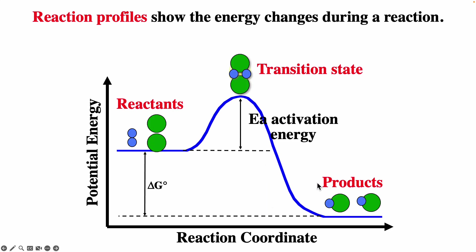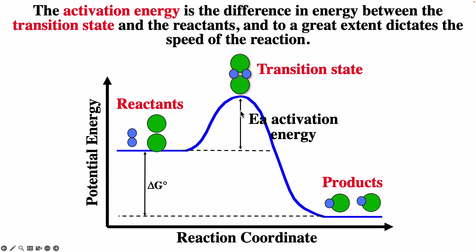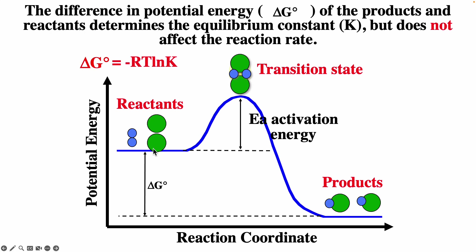We have reaction products and the transition state — this is the reaction profile. The activation energy is the difference in energy between the transition state, the unstable state, and the reactants. To a great extent, this dictates the speed of the reaction. The difference in potential energy of products and reactants dictates the equilibrium constant. So remember, ΔG° = −RT ln K.